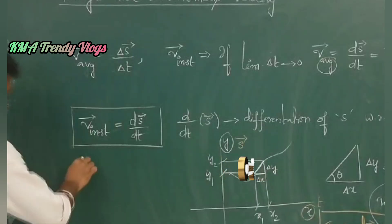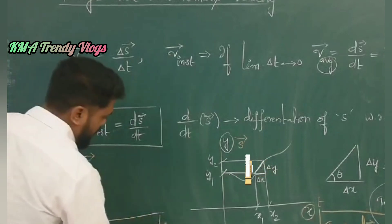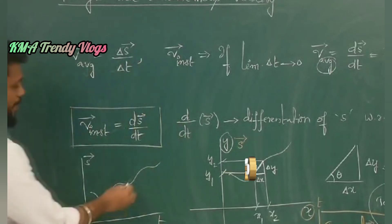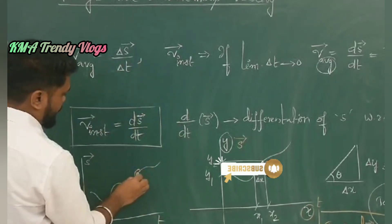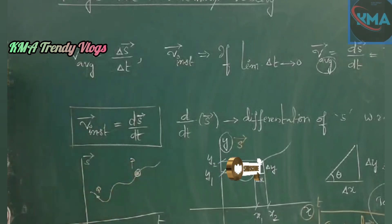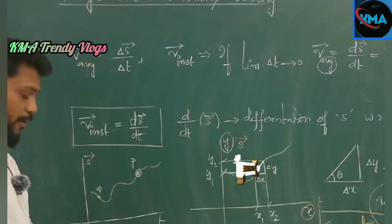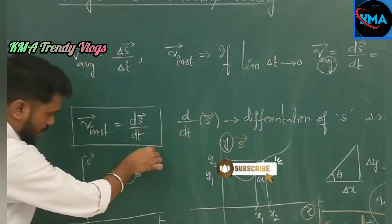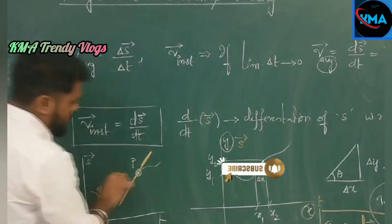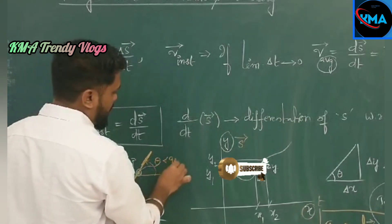If we take a situation like an S versus T graph plotted, and I pick any two points P and Q on it — if I want to say the nature of the instantaneous velocity at point P and point Q, I will draw a tangent to that particular point P. With the reference line, I take the tangent angle theta, and this theta is less than 90 degrees.